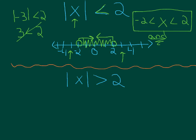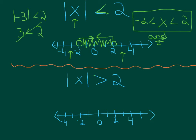Let's look at the next one. This time we have absolute value of x is greater than 2. So let's think about what values of x make this inequality true. Well first, obviously numbers greater than 2 are going to work. But what happens when we plug in 0? Absolute value of 0 greater than 2 — that doesn't work.